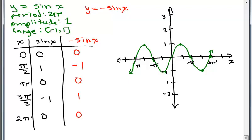So our ordered pairs — here's my X, here's my negative sine X, that's my Y value. I'm going to do this in red. So we've got 0, 0. We've got pi over 2, negative 1 — so it goes down. Then we have pi, 0, same place as the other one. 3 pi over 2, positive 1. And 2 pi, 0 right here.